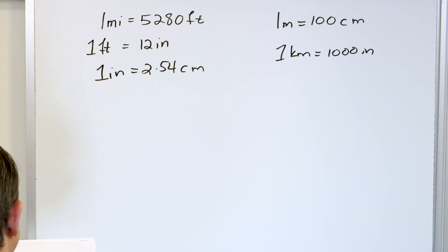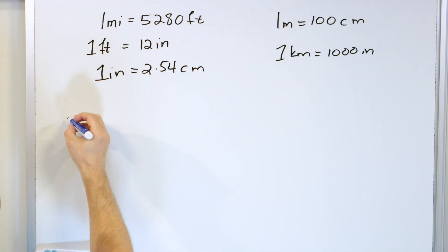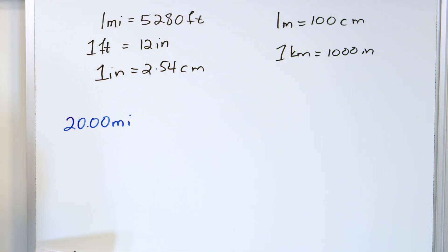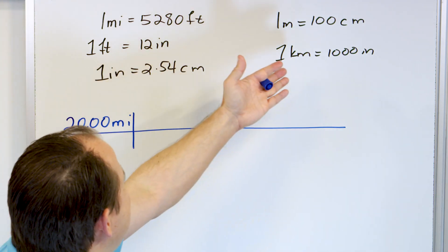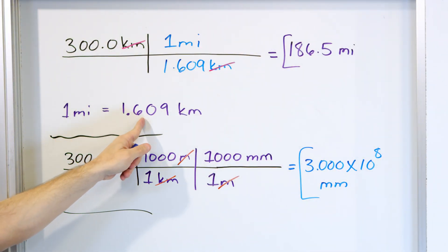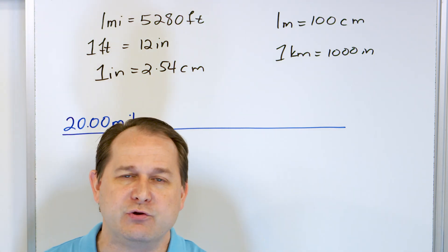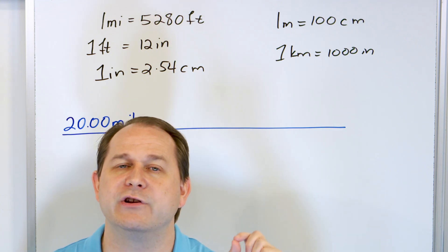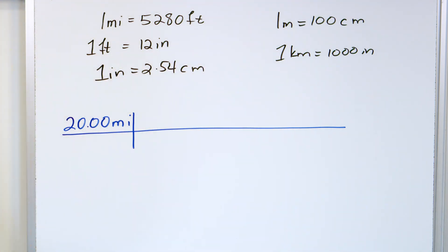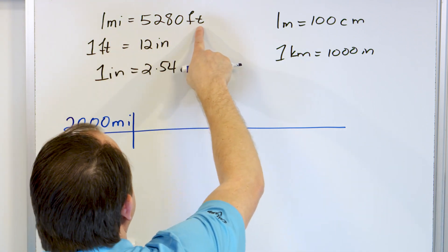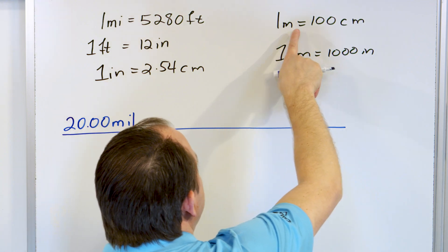I have feet to miles, feet to inches, centimeters to inches, meters to centimeters, and kilometers to meters. The next thing you do is write down what you're given: 20.00 miles. We want to convert this to kilometers. Now, do I have a direct path from miles to kilometers? In the previous problem I already told you that one mile is 1.609 kilometers, so I could do it in one step — but that's not the point of this problem. I want to force you to do a multi-step conversion. The only thing I have for miles is to get to feet, then to inches, then to centimeters, then to meters, then to kilometers.